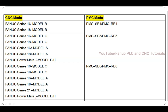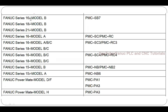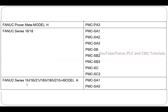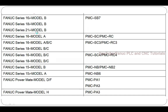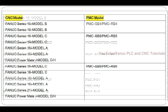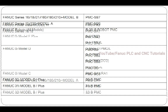Similarly, if you are using any one of those CNC models, select the corresponding PMC model. For 69 Model B series and related, you have to select PMC SB7. If you select the wrong PMC model, your ladder will not load into the machine. For 69 and 89 Model A series select accordingly. Note that the 16 and 18 series are old systems.